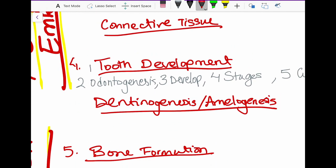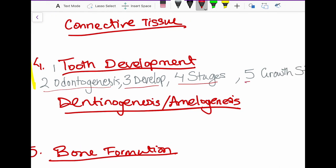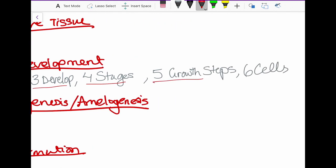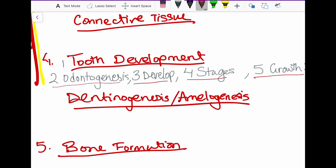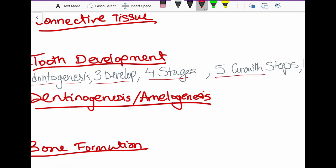So what do you need for that? You need your two basic principles. So you need two odontogenesis, you need three development steps, you have four stages in there, you have five growth steps, and then you have six cells that are involved. So I just like this better. You have to make one tooth, you got to have one, two, three, four, five, six items in tooth development.